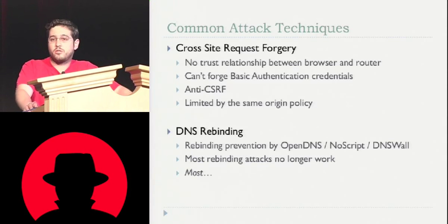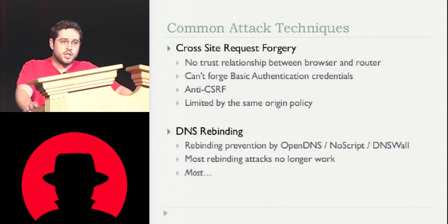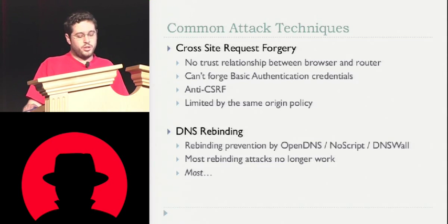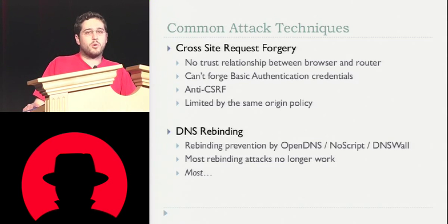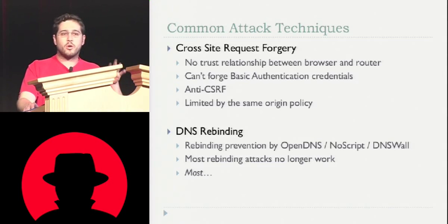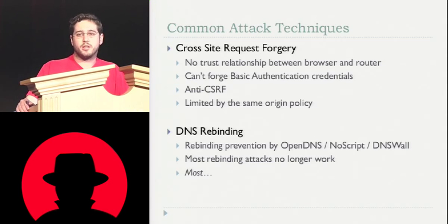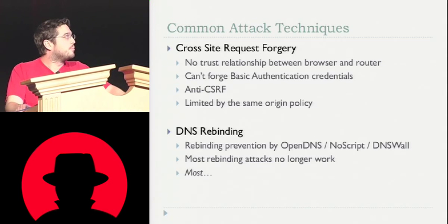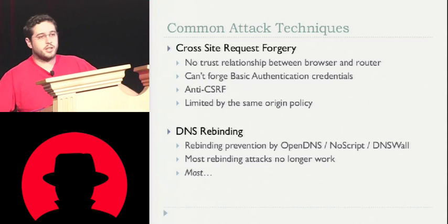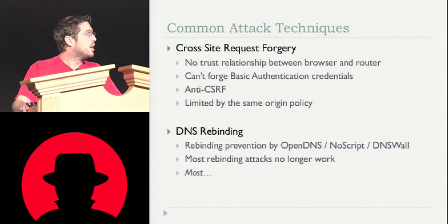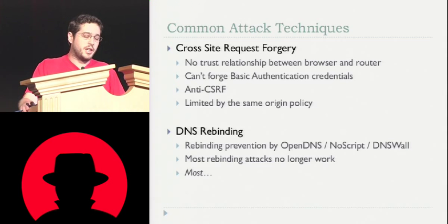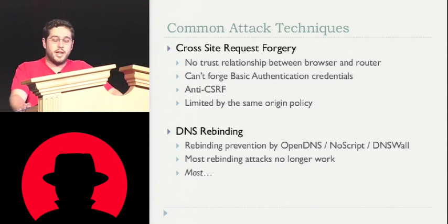First of all, you can't rely on there being a trust relationship between an internal client's browser and the router, because no one ever logs into their routers. You can't forge basic authentication logins anymore with cross-site request forgery — you used to be able to do user:password@URL, but now that doesn't work. IE doesn't even recognize that as a valid URL, and Firefox will actually throw a warning to the user. There's also some anti-CSRF mechanisms in some routers. And ultimately, cross-site request forgery is limited by the same origin policy in the browser, and it always has been.